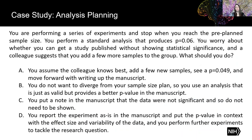Here's a case study. You're performing experiments and stop when you reach the pre-planned sample size. You perform a standard analysis that produces p equals 0.06. You worry about getting this published without a statistically significant result, and a colleague suggests adding a few more samples. What should you do? In A, you add samples, see p equals 0.049, and move forward with the manuscript. In B, you switch to a different valid analysis that provides a better p-value. In C, you put a note that the data were not significant and don't need to be shown. Or D, you report the experiment as is, put the p-value in context with effect size and variability, and perform further experiments.